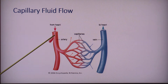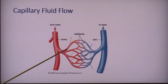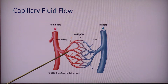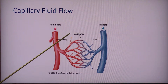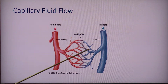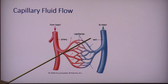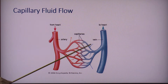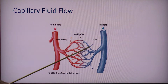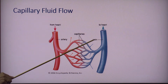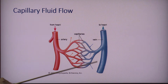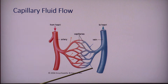Capillaries coming out from arteries will allow fluid to move from the vessels into the interstitial space, while capillaries that are taking blood back to the veins will pull fluid back into the venous system.